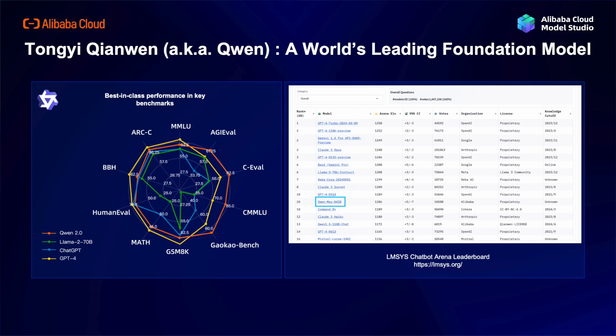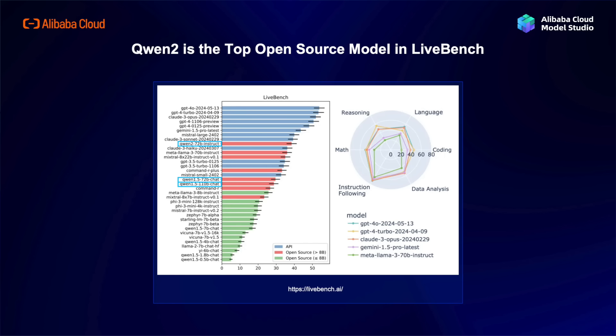From LMSYS's Chatbot Arena leaderboard, you will find Qwen ranked highly alongside renowned models like ChatGPT-4 and other cutting-edge AI systems. This leaderboard serves as an independent validation of Qwen's exceptional capabilities and its ability to excel in various tasks. In June 2024, we open-sourced Qwen 2, and we are happy to see it ranked number one on the LiveBench LLM leaderboard for open-source models. In this comprehensive LLM evaluation benchmark, Qwen 2 series models outperform many other open-source models, even some proprietary models.